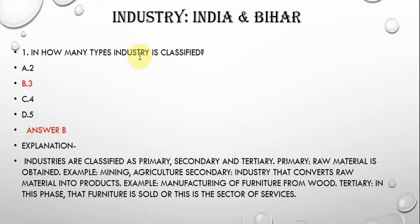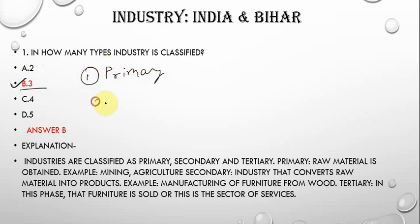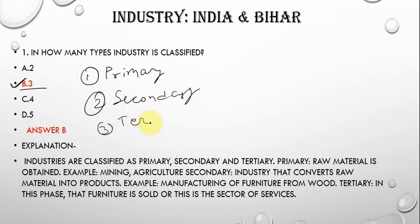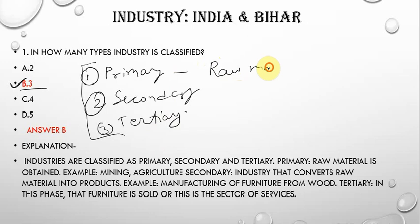The first question is: in how many types is industry classified? Industry is classified into three parts. The first one is primary, the second is secondary, and the third one is tertiary. In the primary sector, raw material is obtained — for example, mining.